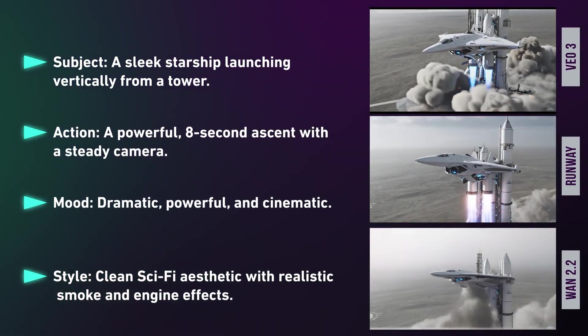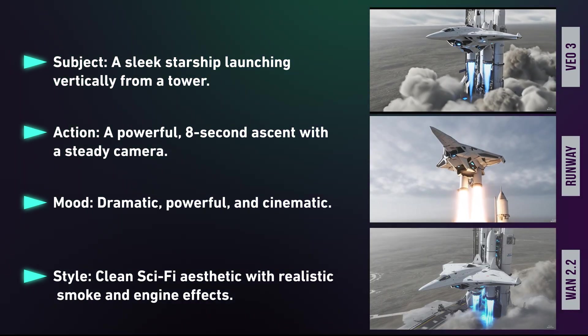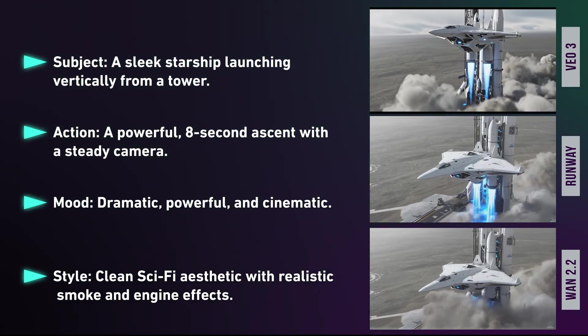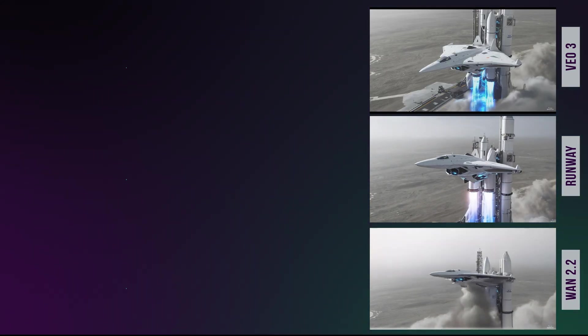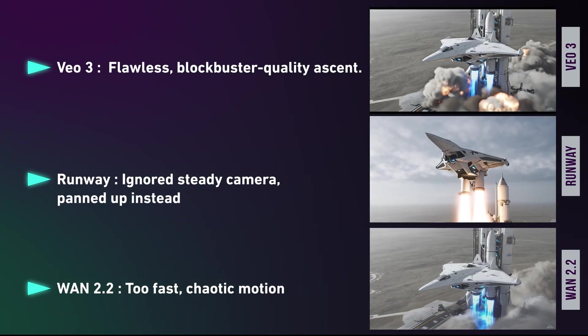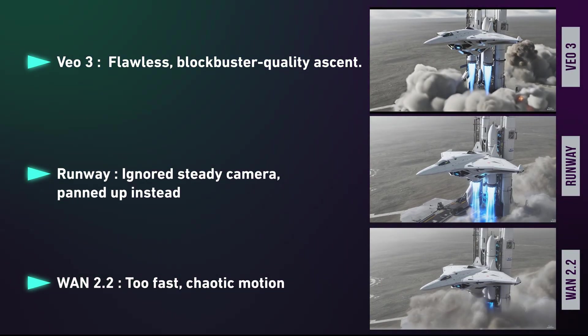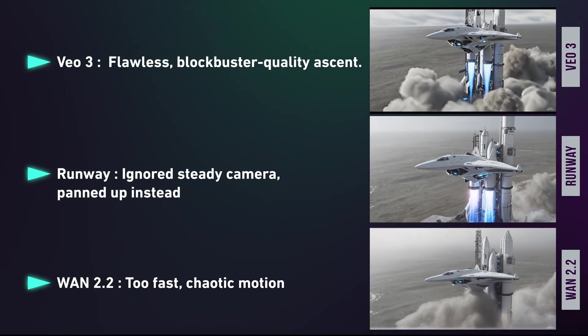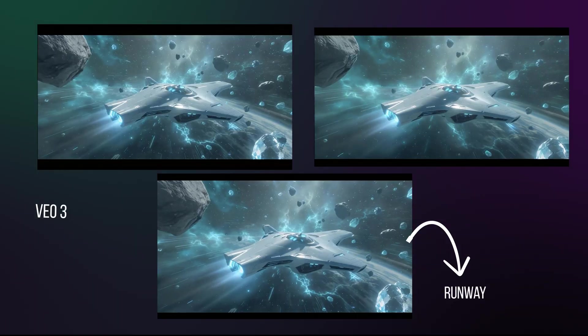For the rocket launch, the prompt demanded a powerful ascent with a steady camera. Runway ignored that and panned up. WAN 2.2 was too fast and chaotic. But Veo 3 delivered a flawless, blockbuster-quality shot.